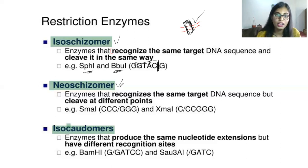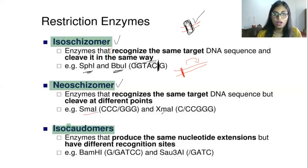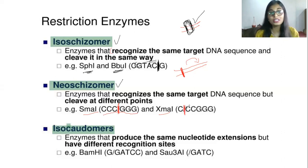Neoschizomers are enzymes that recognize the same target DNA sequences but cleave at different points. For example, SmaI and XmaI — looking at the DNA sequence, the restriction enzyme recognizes between cytosine and guanine, but the cleavage happens between cytosine and cytosine. You can see it is the same sequence, but when it comes to cleavage, it is different — it cleaves at a different point.